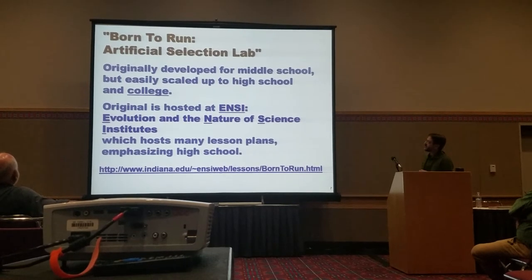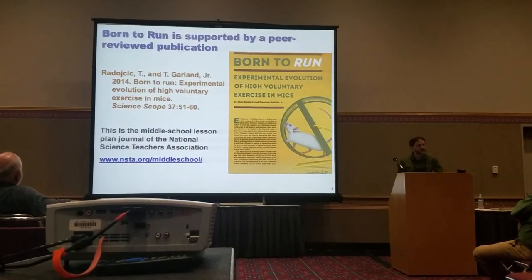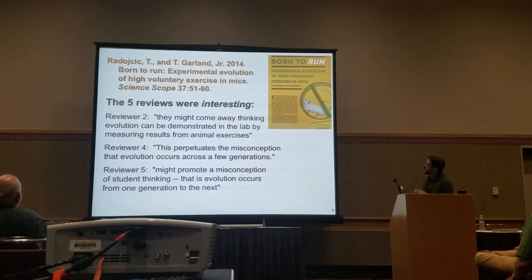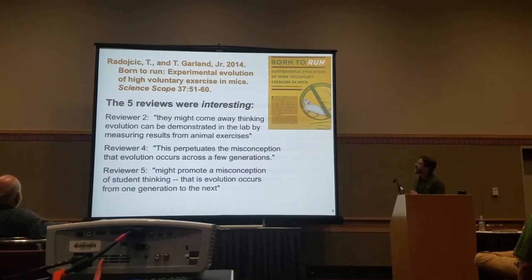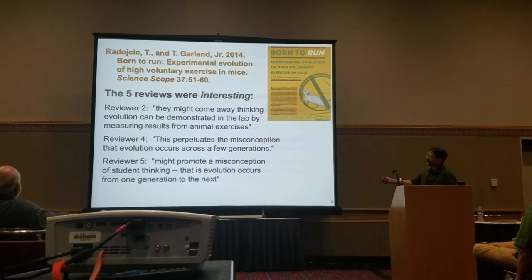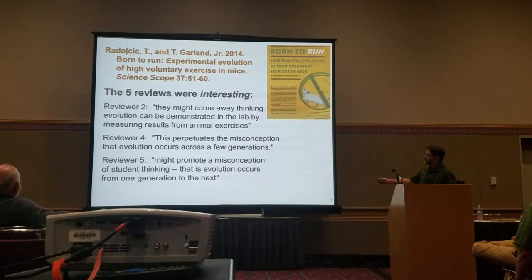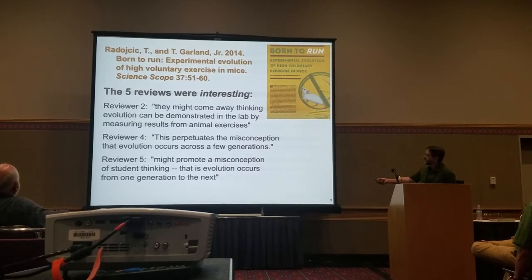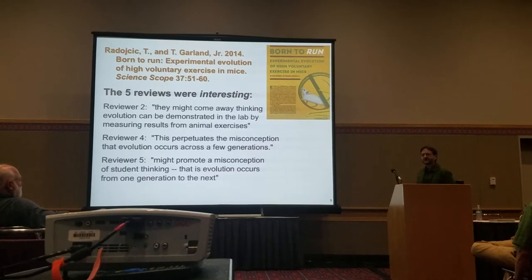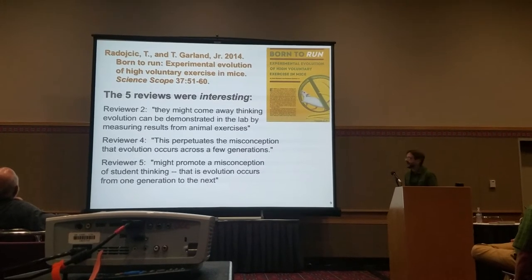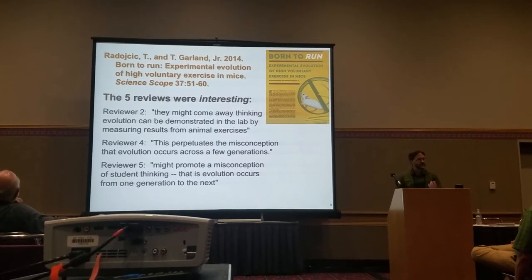This is a lesson plan we originally developed for middle school, but it's easily scaled up to college and hosted at NC. There's a publication that supports it — essentially the middle school lesson planning journal of the National Science Teachers Association. We got five peer reviews, and three of them had a common theme: one said students might come away thinking evolution would be demonstrated in just a few generations, perpetuating the misconception that evolution occurs across only a few generations. These were fairly easy to rebut, and it made the point why we need to publish this kind of thing.